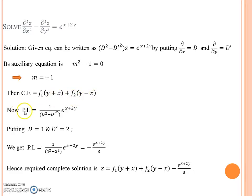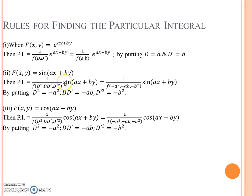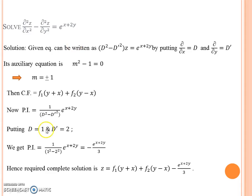Now for PI: PI equals f(x, y) divided by the function of D and D'. Since it is of the form e^(ax + by), we put D equal to a and D' equal to b, where a and b are the coefficients of x and y respectively — here a = 1 and b = 2. So we put D = 1 and D' = 2, giving PI equal to e^(x + 2y) divided by 3.